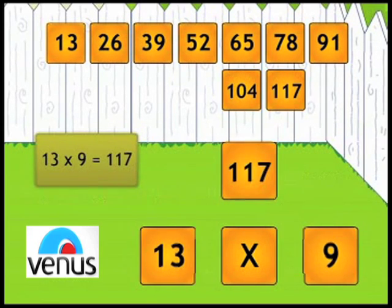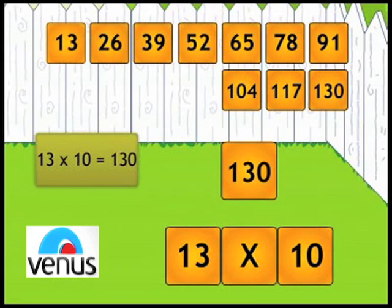Thirteen Nines are 117. Thirteen Tens are 130. Repeat again.